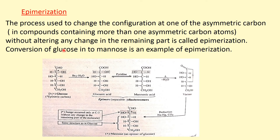Now coming to the epimerization reaction. This is the process or reaction by which the configuration of only one asymmetric carbon atom can be changed in a compound which contains more than one asymmetric carbon atom, without altering any change in the remaining part — that is called epimerization. Glucose is converted to mannose by this series of reactions, in which only the configuration of the alpha carbon atom or C2 carbon atom is changed.